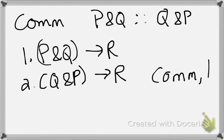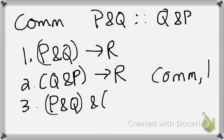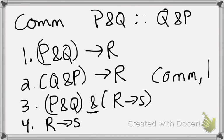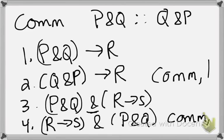So I applied it not to the formula as a whole, as I could. Let's say, suppose I had the formula P and Q and R arrow S. I could apply commutativity to the whole formula, because the main connector is an AND. And I could write R arrow S, AND, P and Q. And that would be by commutativity on three.